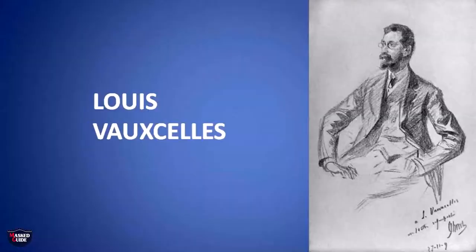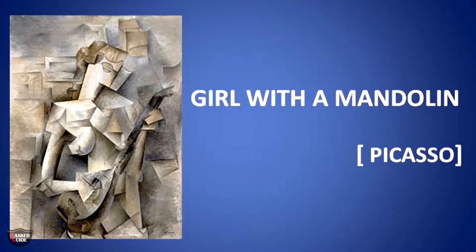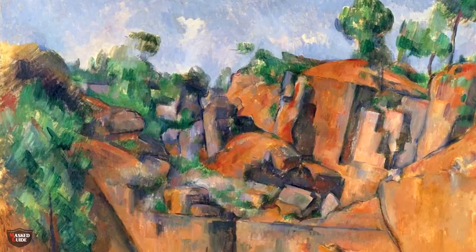The term Cubism didn't come into full use until 1911, and it's thought to have originated possibly from the comments of the French art critic Louis Vauxcelles, who, at an exhibition of Braque's work, described it as reducing everything — places and figures and houses — to geometric schemas, to cubes. And here are some examples of the work of Picasso and Braque, and it's interesting if we look back at an earlier work of Cezanne, where we can see perhaps an early form of Cubism.